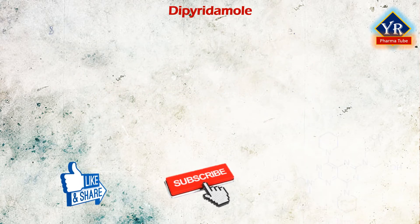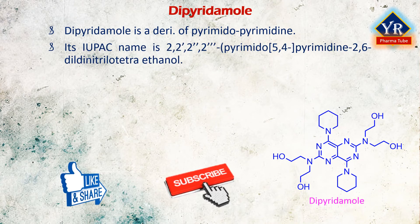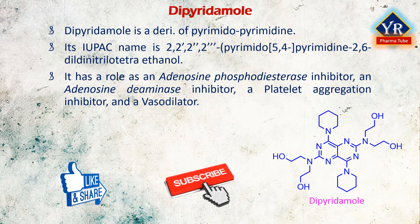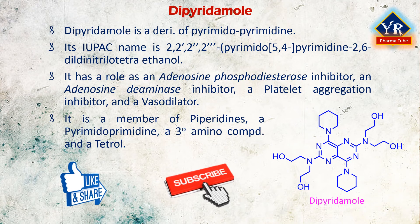The last drug of this lesson is dipyridamol. Dipyridamol is a synthetic derivative of pyrimidopyrimidine with antiplatelet properties. It has a role as an adenosine phosphodiesterase inhibitor, an adenosine deaminase inhibitor, a platelet aggregation inhibitor, and a vasodilator agent. It is a member of piperidines, a pyrimidopyrimidine, a tertiary amino compound, and a tetrol.